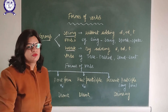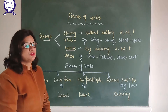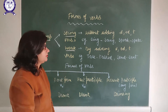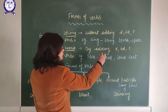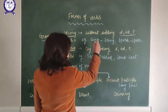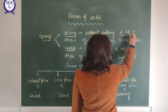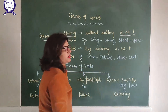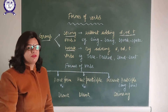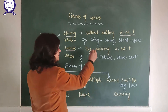So what are the strong verbs, students? The strong verbs are the verbs whose past participles are formed without adding D, ED, or T. If we make the past participles of this form, these types of verbs are known as the strong verbs.